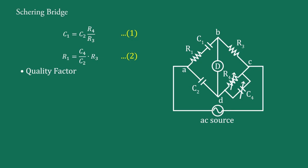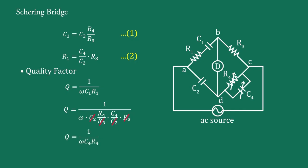The third parameter is the quality factor Q. For a series R1-C1 connection, Q = 1/(ωC1·R1). Substituting C1 and R1 from Equations 1 and 2: Q = 1/(ω · (C2·R4/R3) · (C4·R3/C2)). The C2 and R3 terms cancel, giving Q = 1/(ωC4·R4).